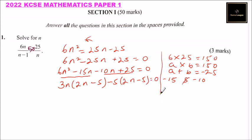You can separate it here. So we say 2n minus 5, and we have the other factor is 3n minus 5 equals 0.